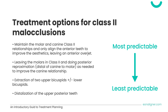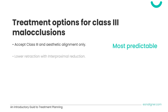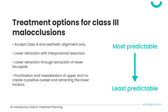The fourth option for class 2 is distalization of the upper posterior teeth, preferably done with auxiliaries and in sequential movements. For class 3 malocclusion treatment options with EON aligners, sorted from most to least predictable: first, accept the class 3 and focus on aesthetic alignment only. Second, lower retraction with interproximal reduction. Third, lower retraction through extraction of lower bicuspids. And lastly, proclination and mesialization of the upper arch to create a positive overjet, and/or retraction of the lower incisors.